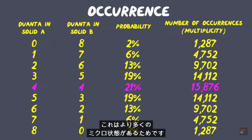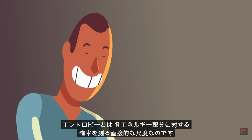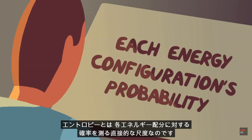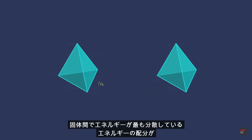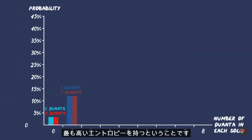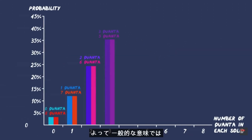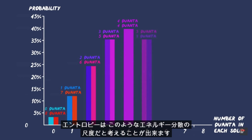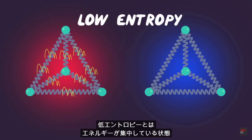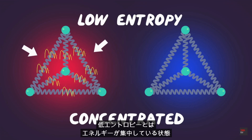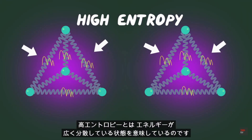That's due to their greater number of microstates. Entropy is a direct measure of each energy configuration's probability. What we see is that the energy configuration in which the energy is most spread out between the solids has the highest entropy. So in a general sense, entropy can be thought of as a measurement of energy spread. Low entropy means the energy is concentrated; high entropy means it's spread out.